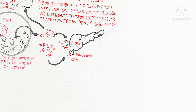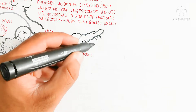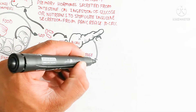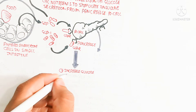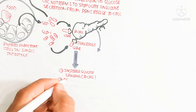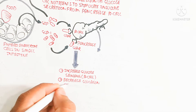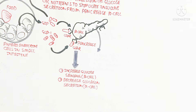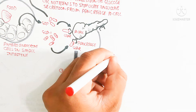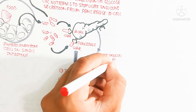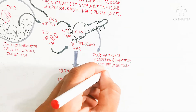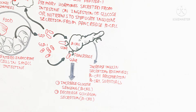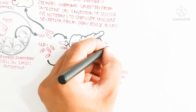On the other hand, GIP also binds with the pancreas, as does GLP-1. The pancreas contains both GLP-1 receptors and GIP receptors, which target the beta cells. After targeting the beta cell, this increases glucose sensing in beta cells, decreases glucagon secretion from the alpha cells, and through GLP-1 receptor and GIP receptor activation, increases insulin secretion. GLP-1 also promotes insulin biosynthesis, beta cell proliferation, and beta cell survival.